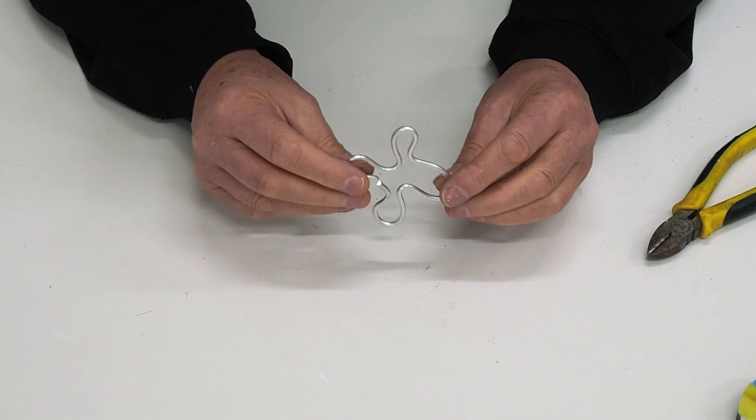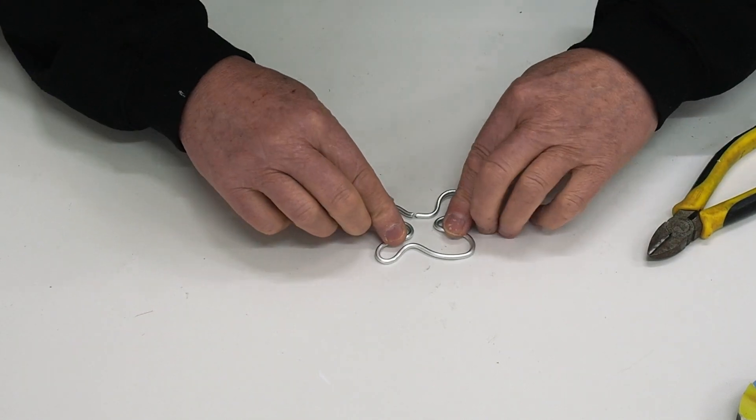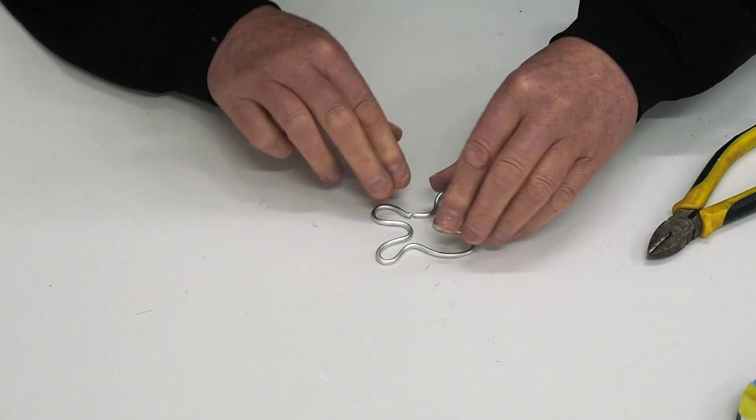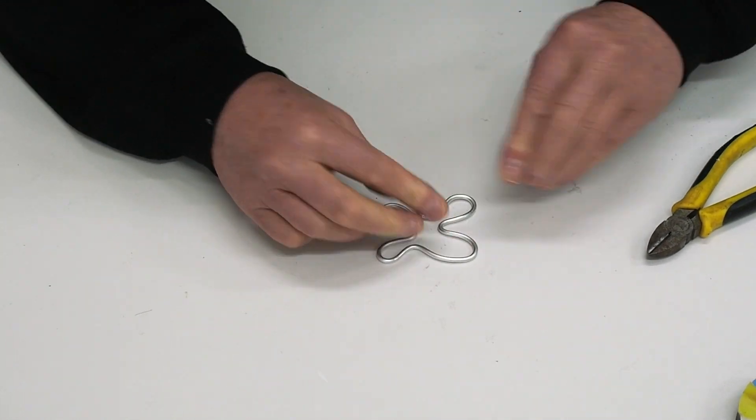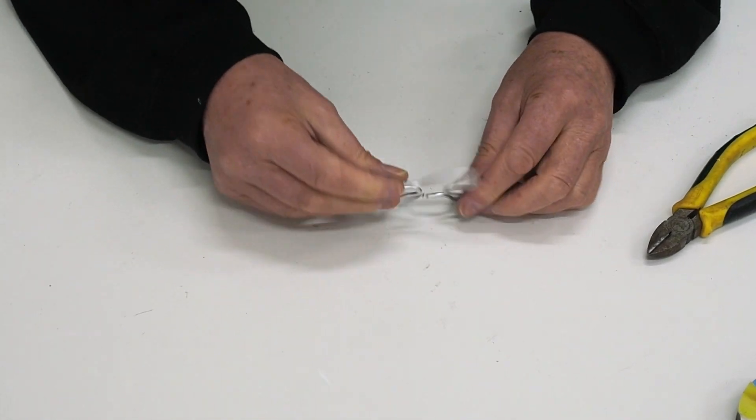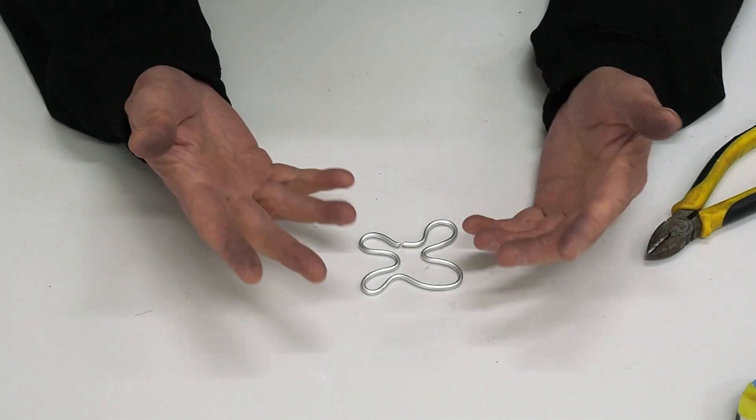All I did was I just pushed down in certain areas where it's raised and just push it down. Because it is aluminum, it's very easy to work with. Then what you end up with is a very flat piece.